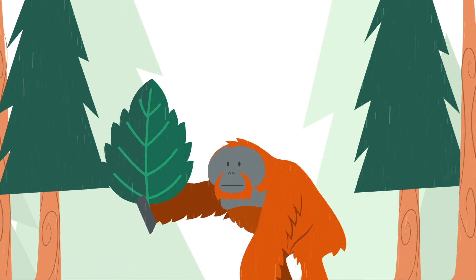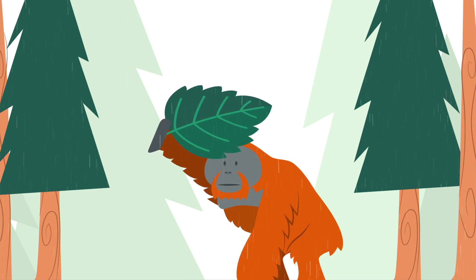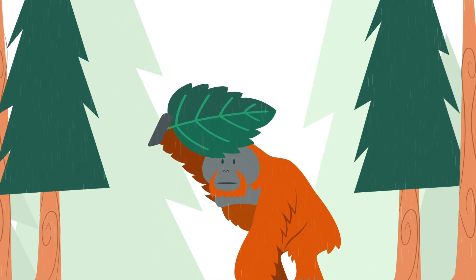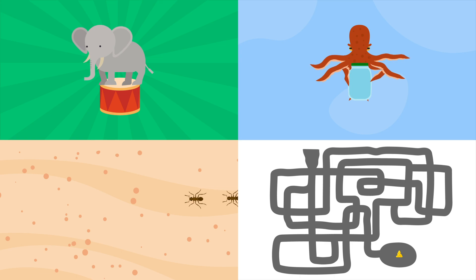Great apes like orangutans can craft umbrellas from plant leaves to protect themselves from rain. So many species in the animal kingdom show intelligence in their own way that it is impossible to cover all of them.